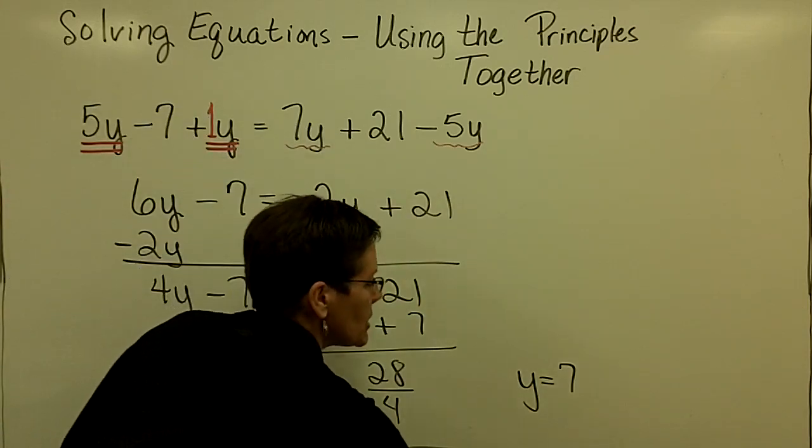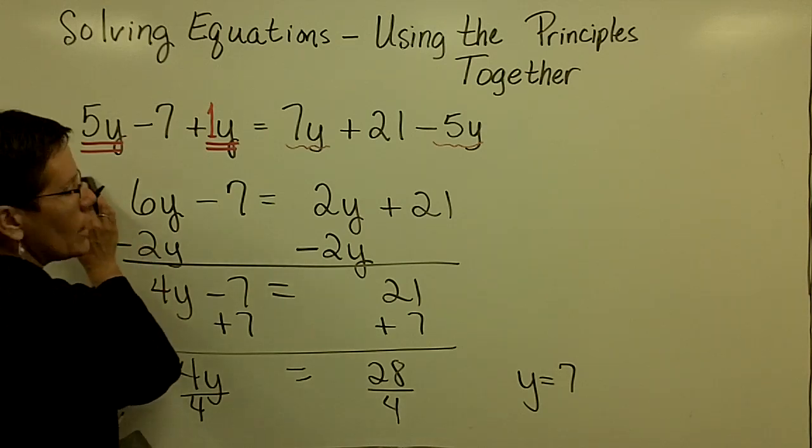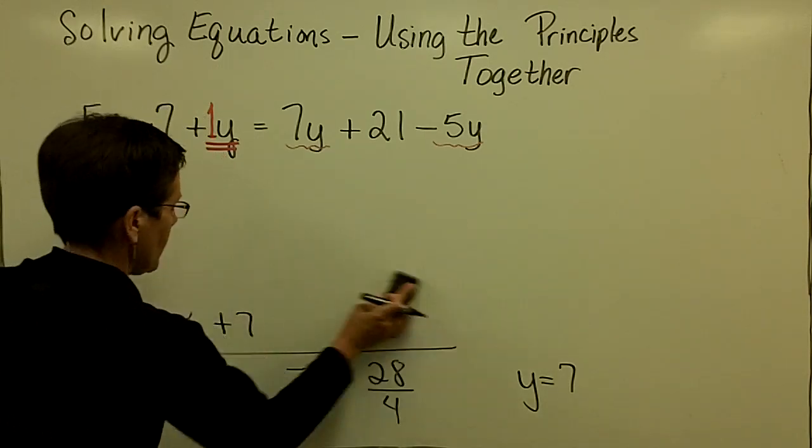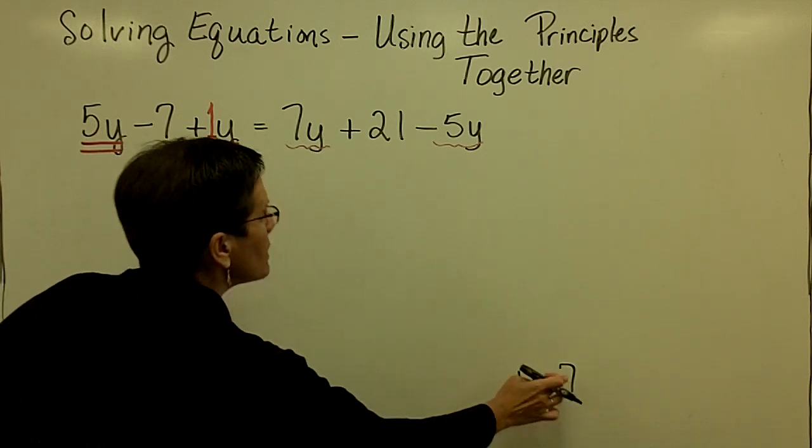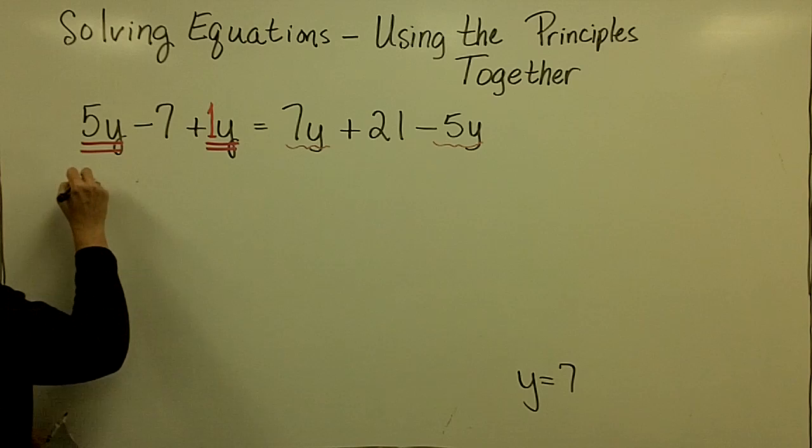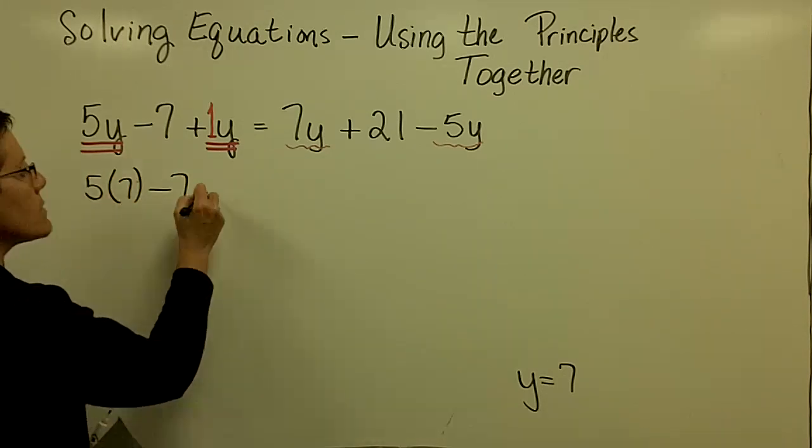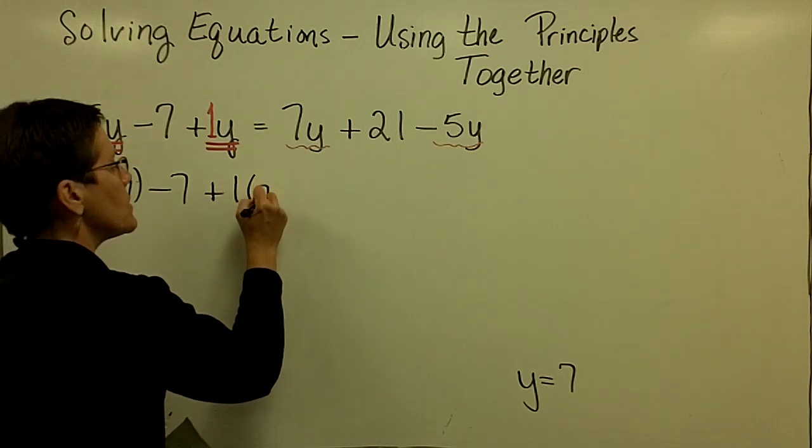Again, maybe one check during this course, this sequence of about three problems. I'm going to go ahead and erase this since it's such a large problem. And I'm going to plug in a value of 7 everywhere I see y. So I have here 5 times 7, which will be 35, then I'll subtract 7, plus 1 times 7.